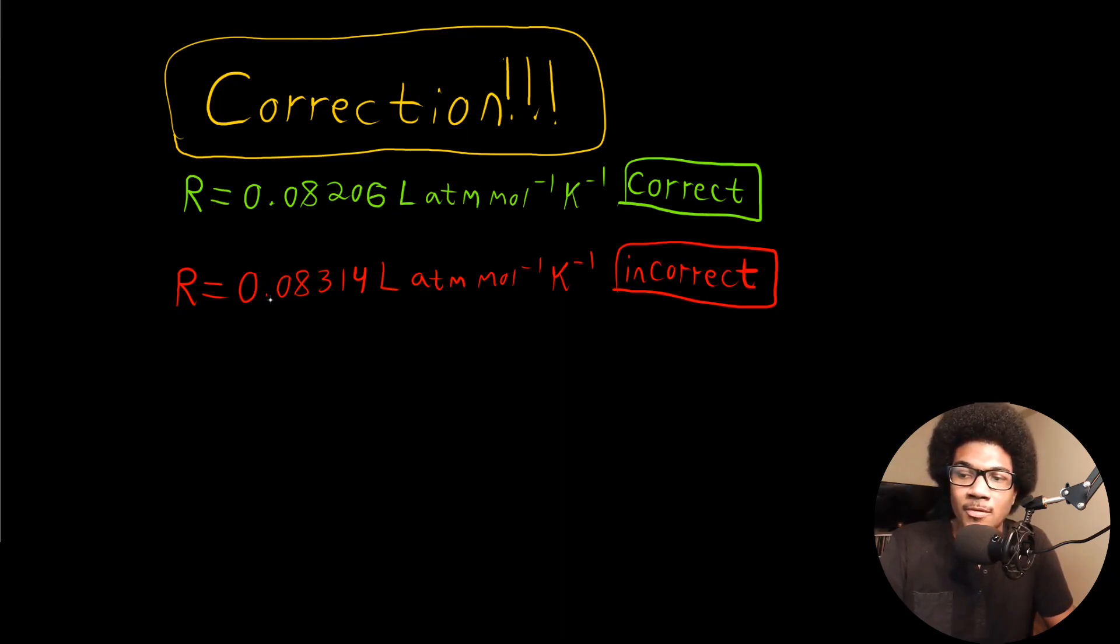Throughout the video I'm going to use this value 0.08314. This is incorrect. Make sure you correct your notes or if you're just watching the video, make sure you know that this is the correct value of the gas constant.